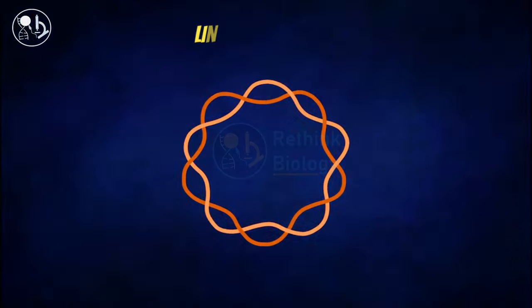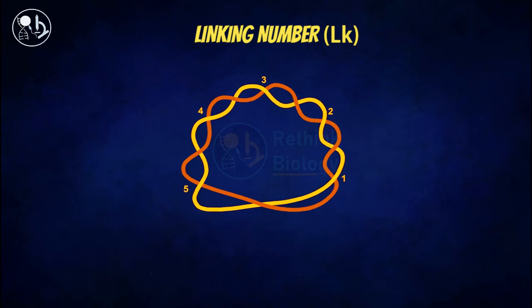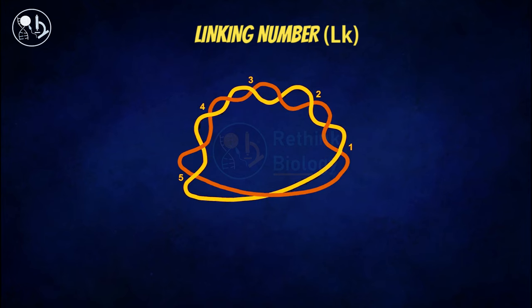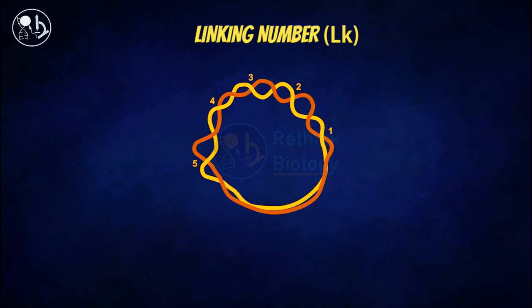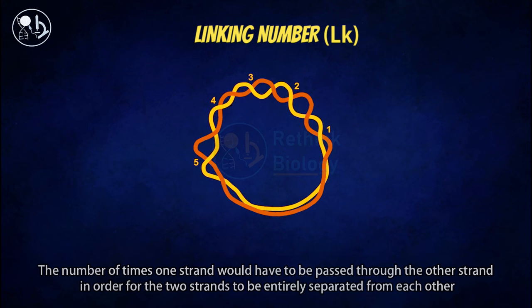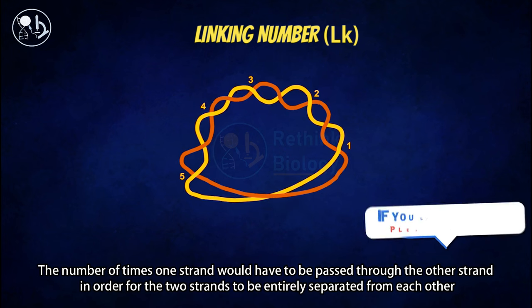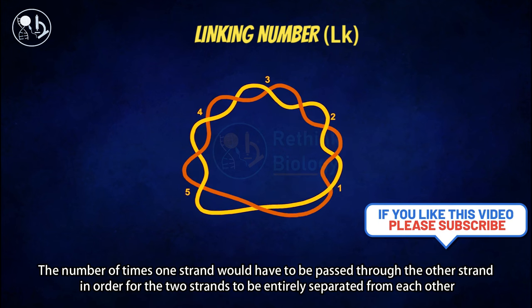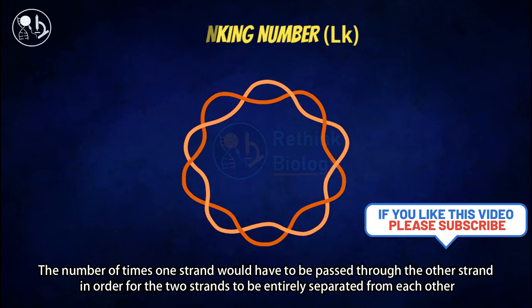It's impossible to untangle two strands of a closed circular DNA. The fundamental topological parameter of a covalently closed circular DNA is called the linking number, or Lk. Linking number refers to the number of times one strand would have to be passed through the other strand in order for the two strands to be entirely separated from each other.